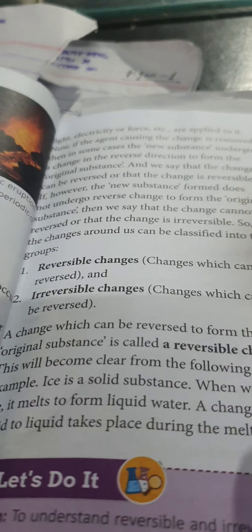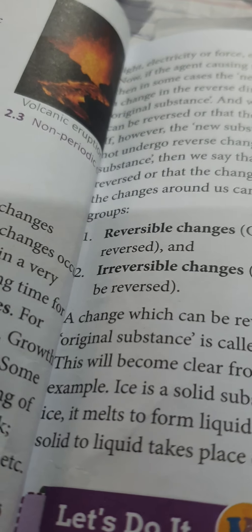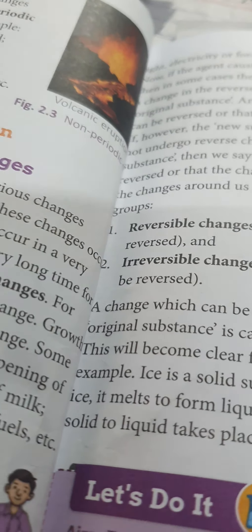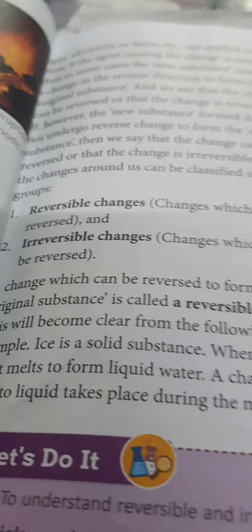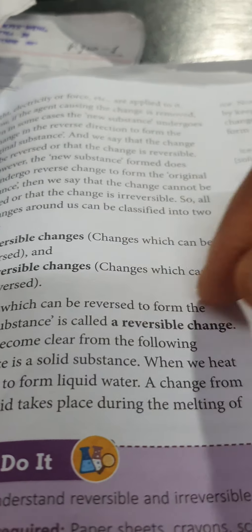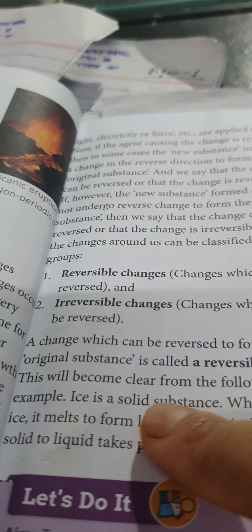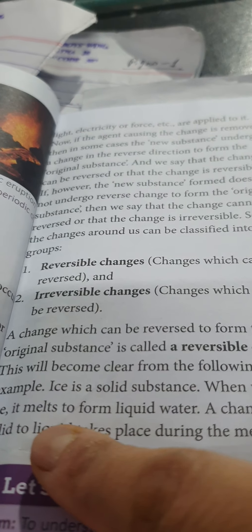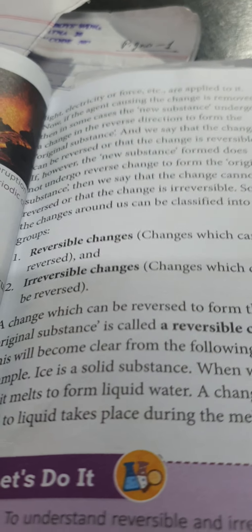Now, there are so many examples happening around us that I can't go through them one by one. But some examples I can show you with the help of your book — how reversible changes happen, what the procedures are, and how different states of matter are involved in reversible changes. This will become clear from the following examples.